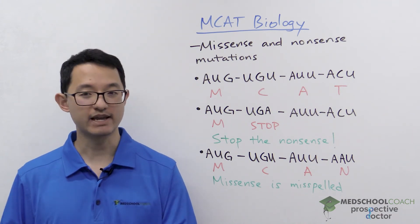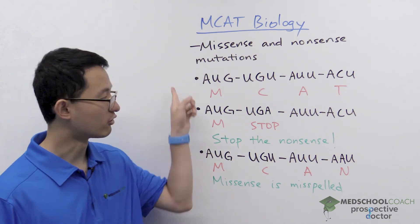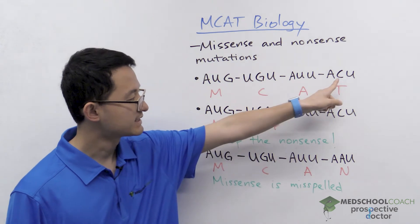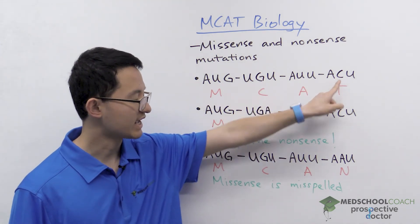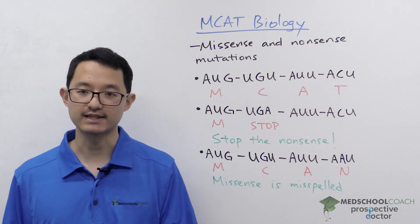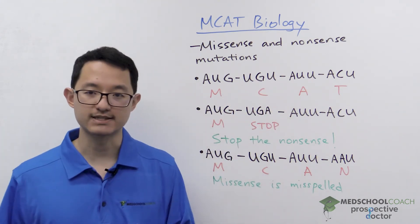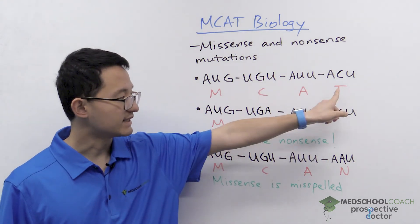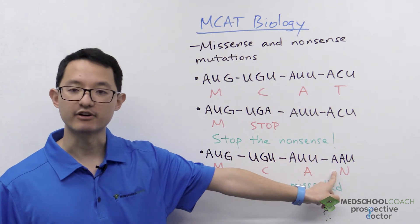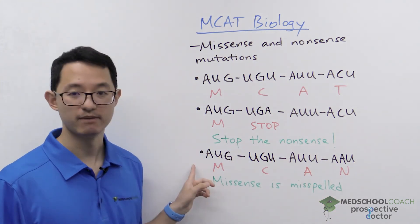Now let's look at missense mutations. If you compare this sequence with the original sequence, it's all the same except this C in the last codon has been mutated to A. The consequence is that during translation, M, C, and A are all translated properly, but instead of T for threonine as the last amino acid, we have N for asparagine. So instead of MCAT, we have MCAN.